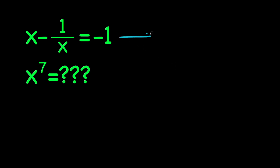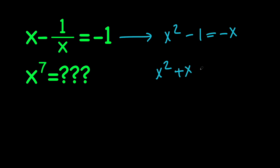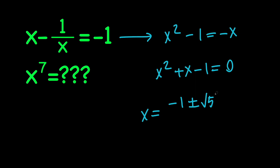To do that, let's go ahead and multiply everything by x to get x squared minus 1 equals negative x. Then, let's go ahead and add x to both sides to get x squared plus x minus 1 equals 0. From here, we can use the quadratic formula and say that x equals negative 1 plus or minus root 5 all divided by 2.